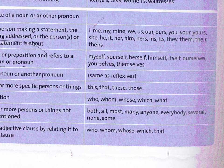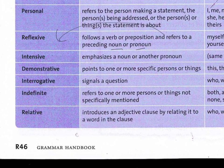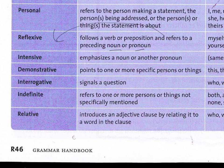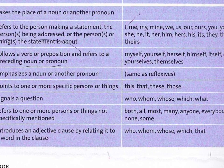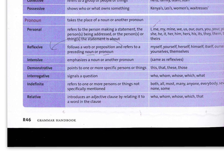An intensive pronoun emphasizes a noun or another pronoun — it makes it intense, gives attention to it. It uses the same list as reflexive pronouns: myself, yourself, himself, and so on. For example, 'I myself have never been a cheater' — you're saying 'I' twice to emphasize the truth of the statement.